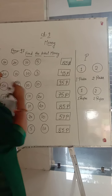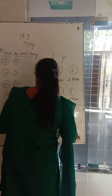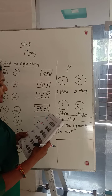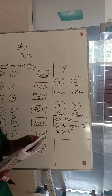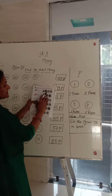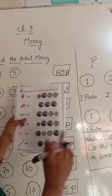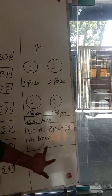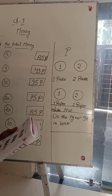Understand? And your homework is you have to do page number 98 in your book. Match the price of each item to the total money. Understand? Do page number 98 in the book — it's your homework. Okay? Thank you.